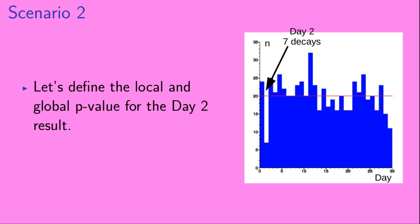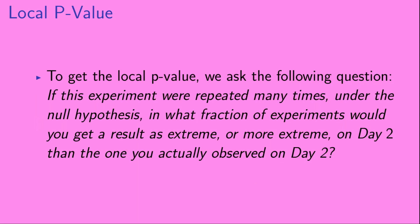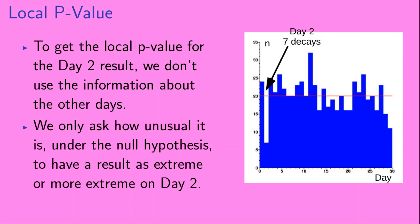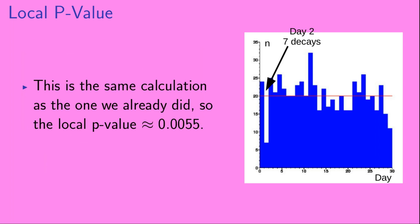Let's define the local and global p-value for the day 2 result. To get the local p-value, we ask: if this experiment were repeated many, many times under the null hypothesis, in what fraction of experiments would you get a result as extreme or more extreme on day 2 than the one you actually observed on day 2? To get the local p-value, we don't use information about the other days — we only ask how unusual it is under the null hypothesis to have a result as extreme or more extreme on day 2. This is the same calculation as before, so the local p-value is approximately 0.0055.